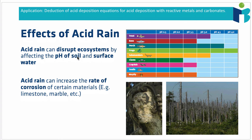The increased acidification disrupts ecosystems by affecting the pH of soils — here is an example of a forest badly affected by acid rain, resulting in the death of many trees and plants that can't function when soil pH gets too low. There are also cases where surface water and lakes become increasingly acidified, meaning animals that rely on that habitat can no longer live there. A graph here shows the pH ranges that certain animals can withstand — many start to die around pH 5.5, and all the animals listed will die in surface water below pH 4.